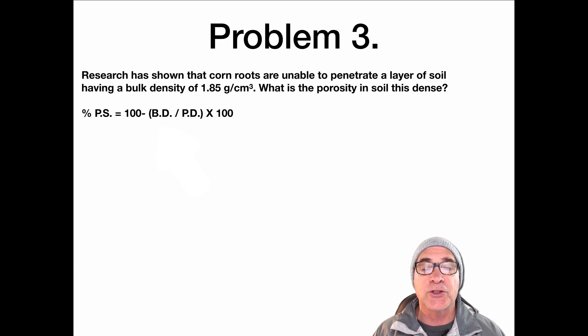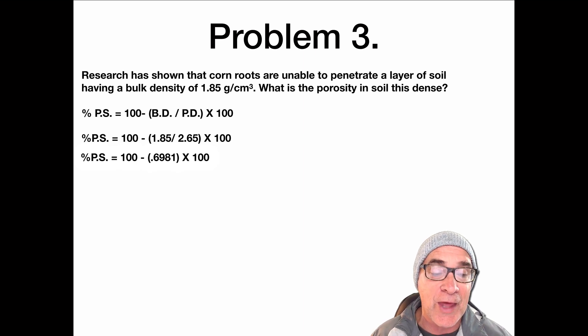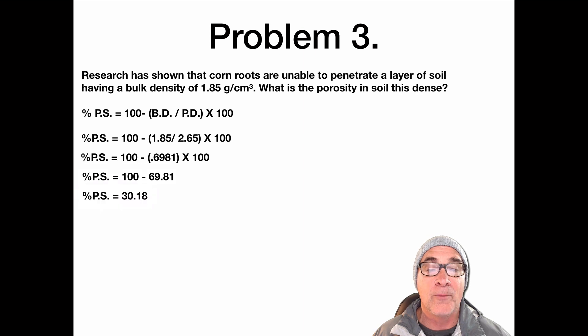Problem three, though, is research has shown that corn roots are unable to penetrate a layer of soil having a bulk density of 1.85 grams per cubic centimeters. What is the porosity in this dense soil? Well, what we're going to be doing is we're just going to drop in the 1.85 into our equation and divide it by 2.65. When we do that, we get 0.6981, and we're going to multiply that by 100. When we do that, we're going to get a number of 69.81. Subtract that, and our porosity is 30.18, or a little over 30%.